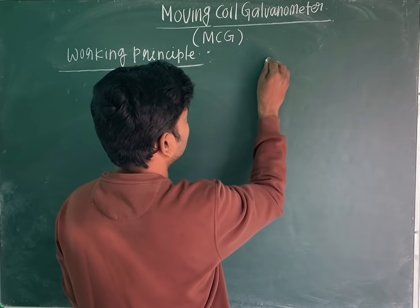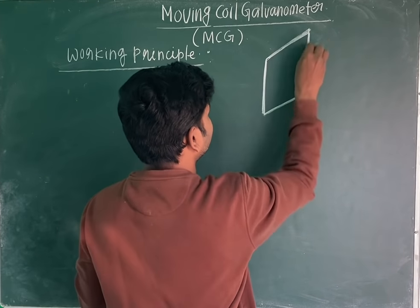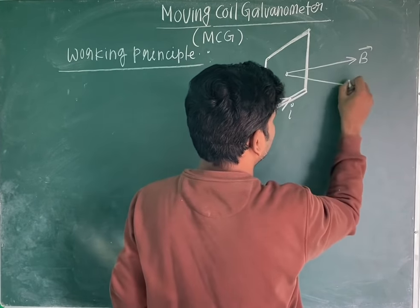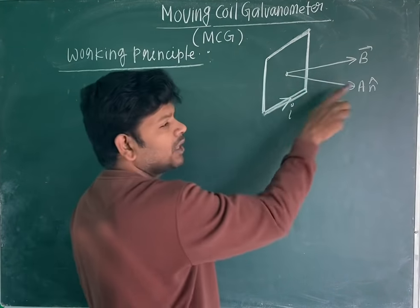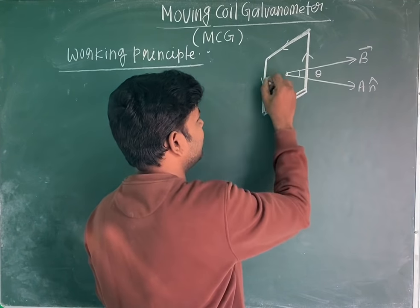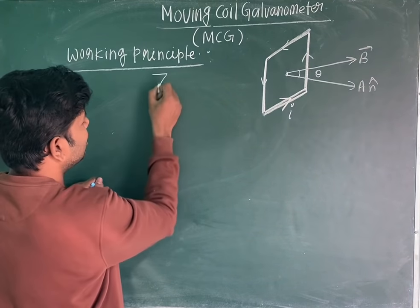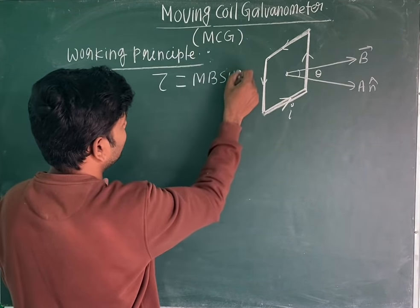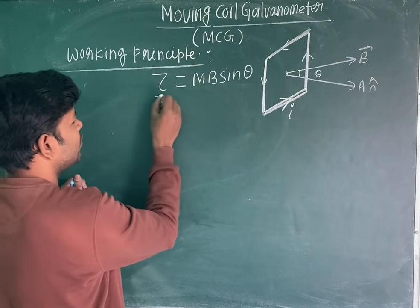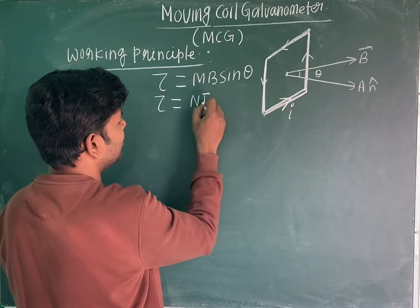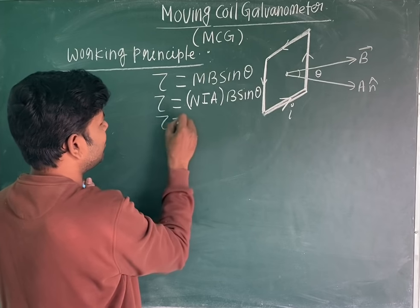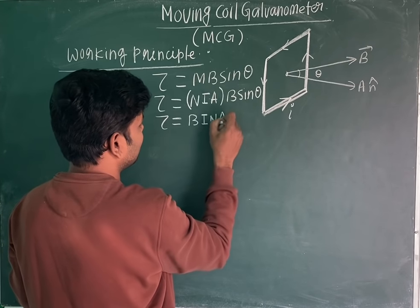Suppose we have a current carrying coil carrying current I, placed in a magnetic field B. The area vector is A into n-cap, where n-cap gives the direction normal to the surface, and theta is the angle. The torque experienced is given by torque = M × B × sin(theta), where M is the magnetic moment. Replacing magnetic moment as N×I×A, the torque becomes N×I×A×B×sin(theta).